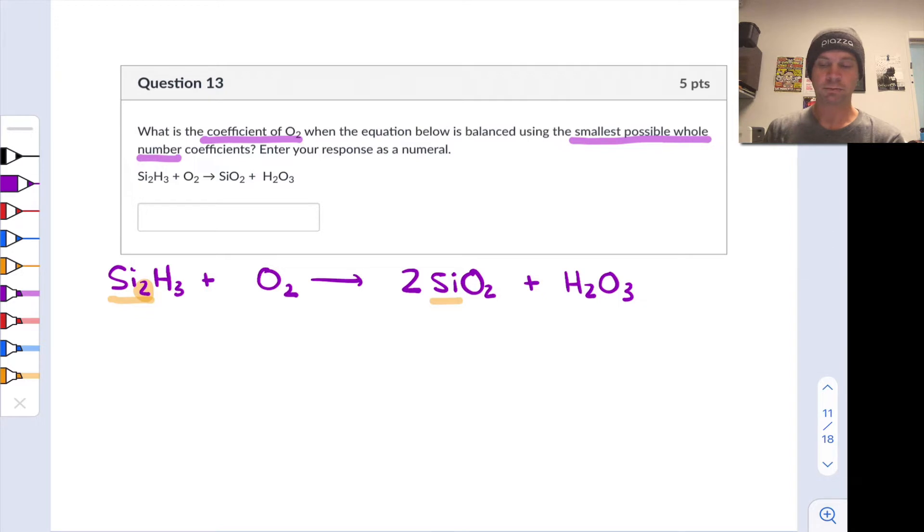Alright, fantastic. Now, hydrogen appears only in Si2H3 on the left and H2O3 on the right, and to make the hydrogens balance, I can see that I'm going to need actually two molecules of Si2H3 and three molecules of H2O3. This ensures that I have six hydrogens on the left and six hydrogens on the right, but at the same time, I need to scale the number of SiO2s, right? Because we previously indicated that the ratio of SiO2 to Si2H3 has to remain two to one. So I'm going to scale that up to four since I scaled Si2H3 up to two. So here, we're almost done, it seems. We're sitting pretty with respect to hydrogen and silicon, but oxygen remains unbalanced.